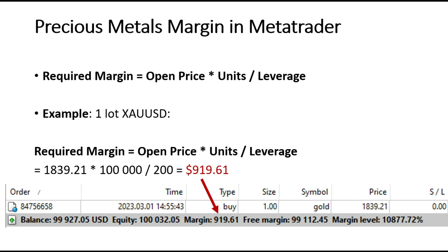Many websites show bad, complicated formulas with contracts and ounces. But in MetaTrader you simply use micro lots, mini lots, and lots — 1,000, 10,000, and 100,000 units. Price multiplied by units, divided by leverage. That's it. You can even trade gold with micro lots and you don't need a huge margin. Gold is volatile, but trading micro lots in MetaTrader keeps risk comparable to Forex pairs.